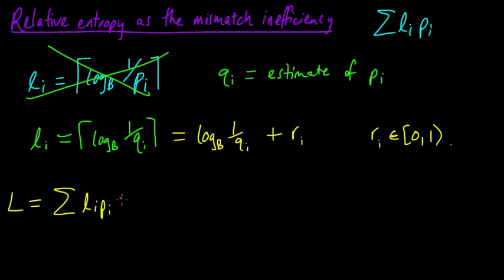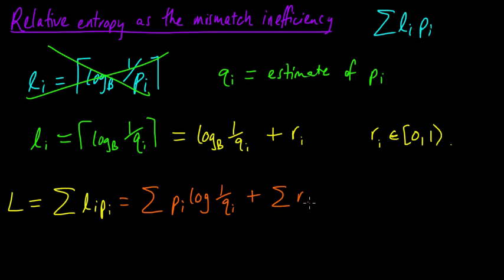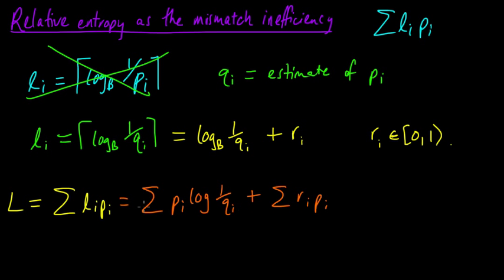Let's plug in that expression for the L_i's, distribute the P_i's, and move the sum through. What we get is a sum of P_i times log of 1 over Q_i, plus a rounding term involving R_i and P_i. This first quantity actually looks pretty familiar — it's exactly the thing that showed up when we were minimizing our expected codeword length, when we did the change of variable letting Q_i equal 1 over B to the L_i.